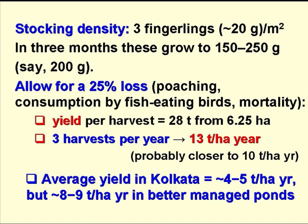The ponds are stocked with fingerlings, which weigh around 20 grams, at a density of about 3 per square meter, and in three months these grow to 150 to 250 grams — not a large size, but they are sold at a price that the poor can afford. Allowing for a 25% loss due to poaching, death and consumption by fish-eating birds, the yield per harvest is just over 4 tonnes per hectare. With three harvests per year, the yield is about 13 tonnes per hectare per year, although usually it will be closer to 10 tonnes per hectare per year. The actual average yield in the Calcutta ponds is 4 to 5 tonnes per hectare per year overall, but the better-managed fish ponds produce 8 to 9 tonnes per hectare per year.